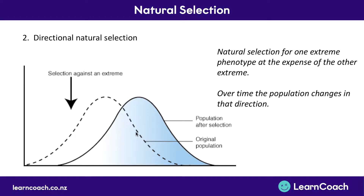It could also go in the opposite direction — selecting for shorter people over taller ones. For instance, in a forest environment it's harder for taller people to hide from predators or move around, so they might be selected against and the population would get shorter over time. Either way, it's selecting against one extreme and the population moves directionally towards a certain phenotype.